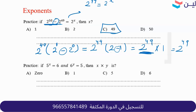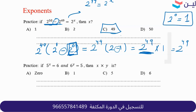A student asks: how did 2 to the power of one minus 2 to the power of zero give us 2 minus 1? What is 2 to the power of zero? The student initially thinks 2 to the power of one is 2 times 1. The answer is 2 to the power of zero equals 1.